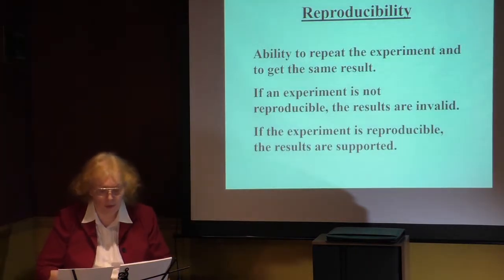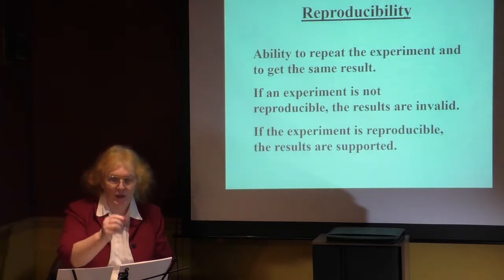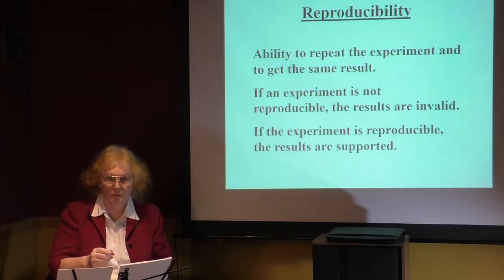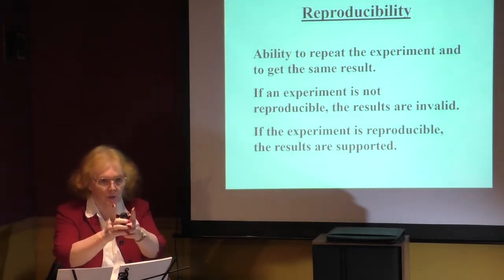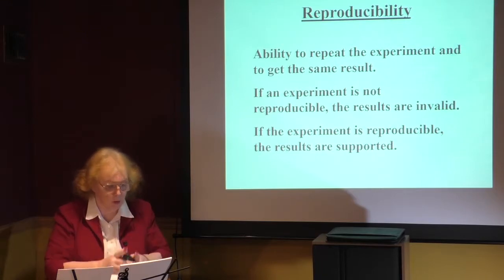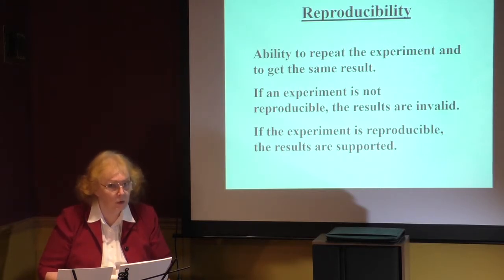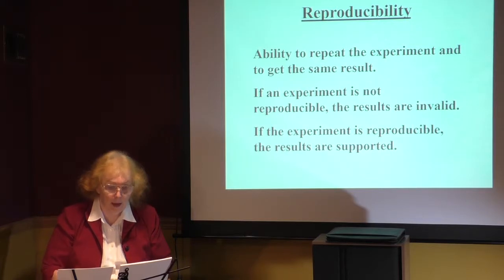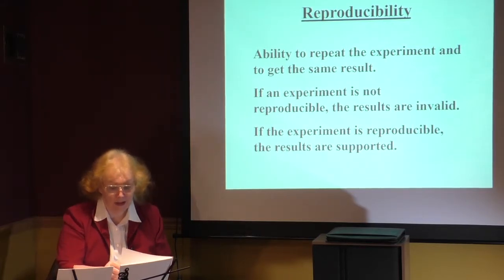Reproducibility is an important feature. You have to be able to repeat the experiment and get the same results. You repeat exactly the same experiment and the results come out within the precision number. If that works, your results have been validated and supported. If you can't do it, the study was wrong — you've got to go back to ground zero and rebuild a new study, because it's not holding together.